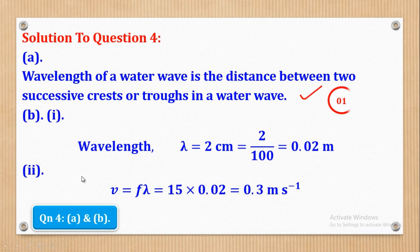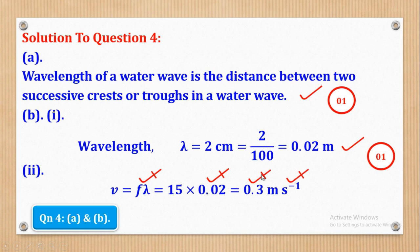Let's see how marks can be awarded. A correct definition is one mark. Converting to meters is also one mark. For roman 2: half a mark for the formula, half a mark for the substitution, half a mark for the correct magnitude of the answer, and another half a mark for the correct SI unit. That's how the two marks come about in roman 2.